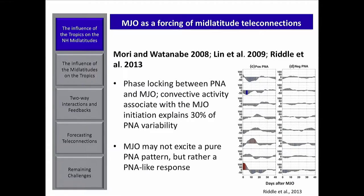Around that time it was found that in the northern hemisphere there are two modes of variability with periods of about 48 and 23 days, and that north Pacific circulation anomalies develop one to two weeks after the appearance of convection anomalies over the tropical Pacific. Later on, when more data became available, people started to think of the MJO as a forcing of mid-latitude teleconnections. Some studies suggested a phase locking between the PNA and the MJO, with the MJO explaining about 30% of the PNA variability.